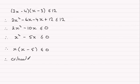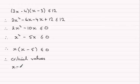Next we find the critical values. The critical values are the values of x which make this equal to 0. So x could equal 0, or x minus 5 could equal 0, leading to x equaling 5. So there are two critical values: 0 and 5.